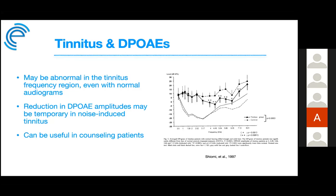People with bothersome tinnitus are more likely to have abnormal OAEs. A graph from the Shlomo 1997 study showed the DP-gram of a normal-hearing tinnitus group was significantly different from non-tinnitus controls, with significant decreases over the 4,000 to 7,000 Hz range. OAEs can also be used in counseling — showing patients the DP-gram with dips or abnormalities can help them visualize their condition. During DPOAE assessment, patients sometimes report the stimulus sounds exactly like their tinnitus, which can assist in tinnitus pitch matching.